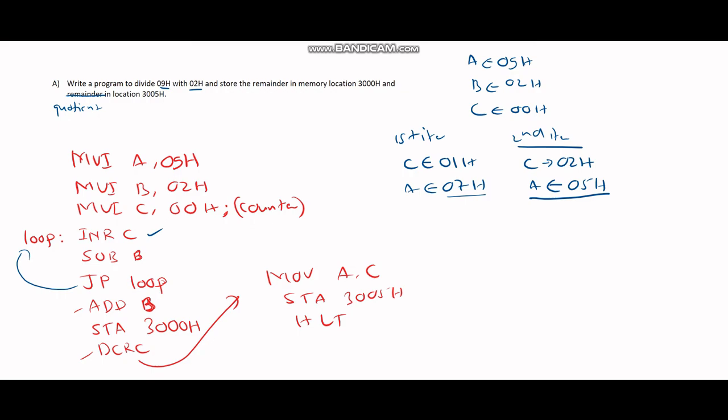Yes, this is a positive value, so we again go back to loop in the third iteration. We subtract B from A again, so 05 minus 02 is going to be 03H. We check if this is a positive value. Yes, this is a positive value, we go to fourth iteration.